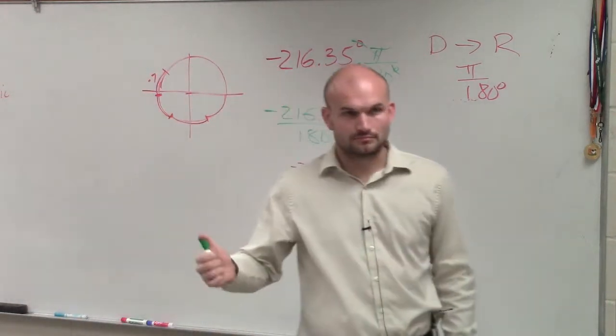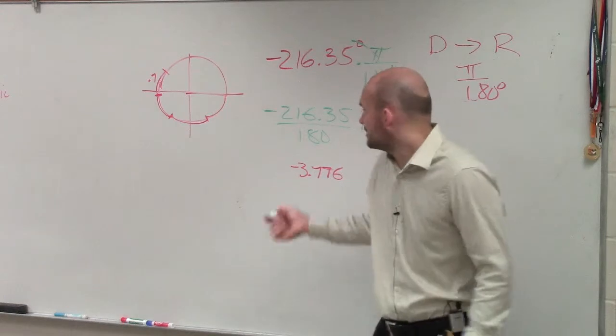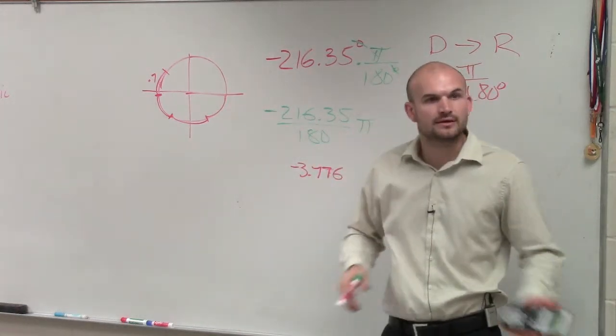Wait, so you divided pi by bottom and multiply by two pi. Yeah, I mean, you can multiply 216 times pi and then divide it by 180. Same thing.